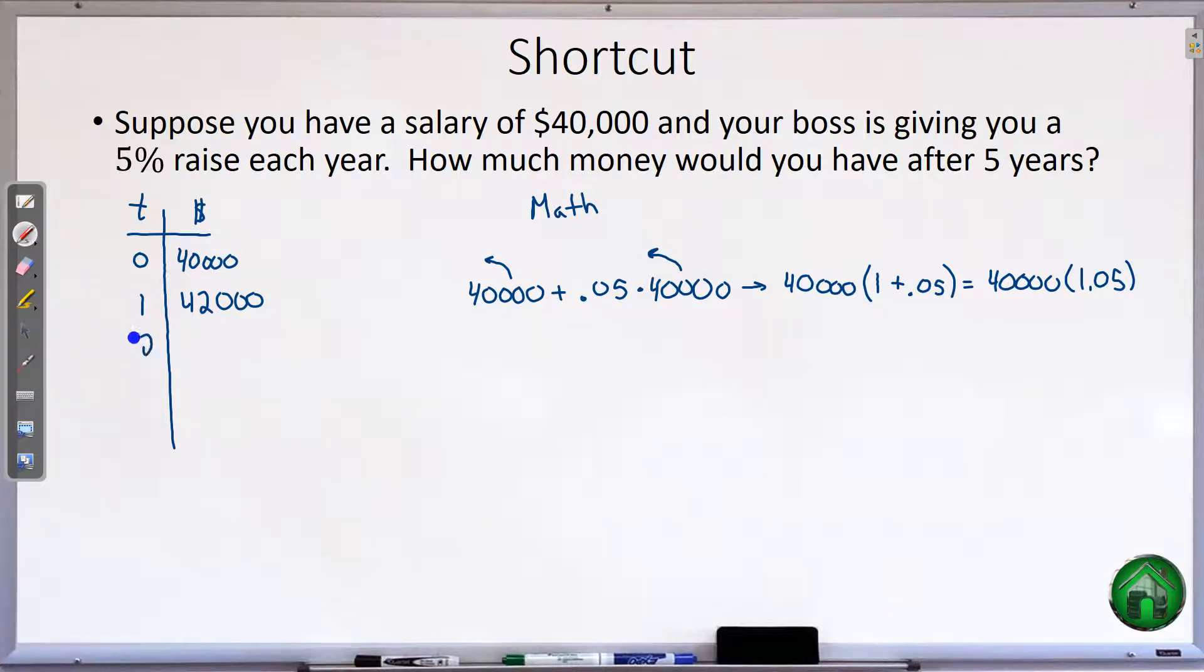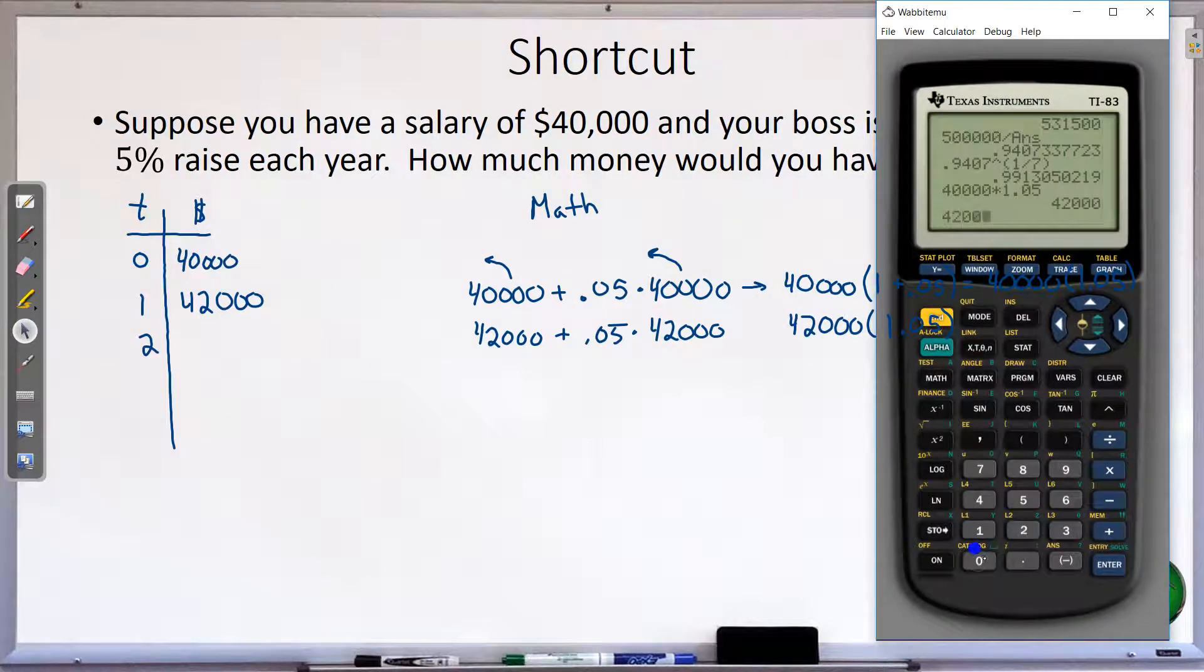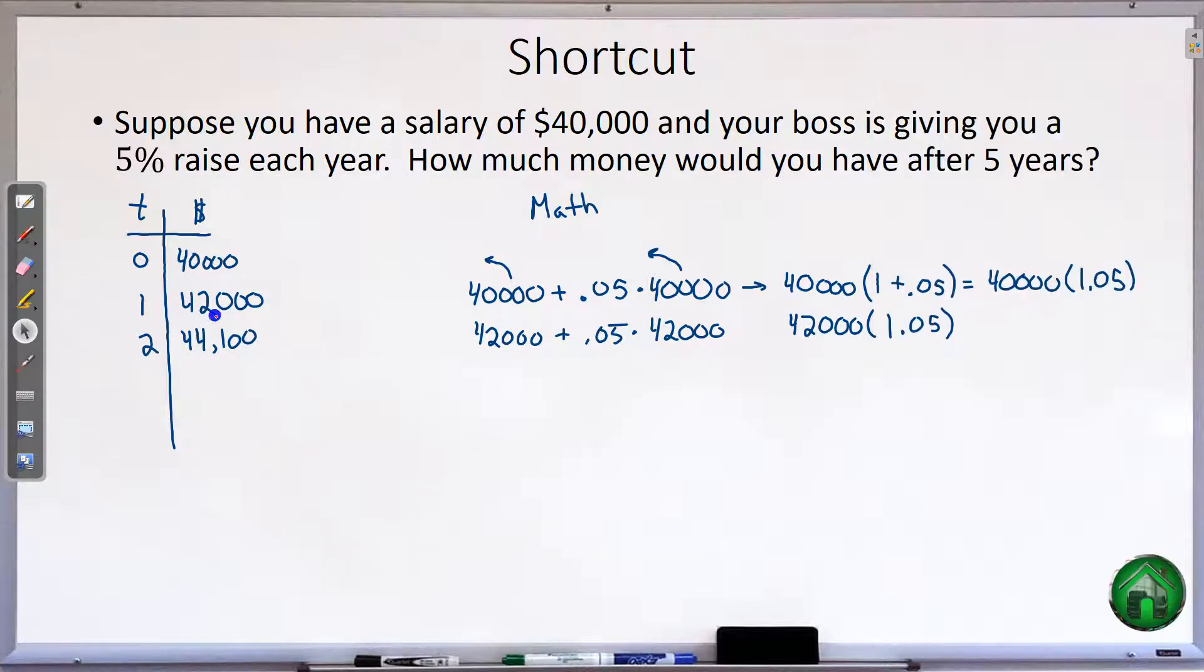And so we're going to do that one more time so you can kind of see how that works. So now for our second year, we did $42,000 plus .05 times $42,000. And so now you can see that they both have a $42,000 in common. So I would pull out, factor out that $42,000. You'd be left over with a 1 plus the .05, so that's 1.05. And now that's all we have to do. $42,000 times 1.05 gives us $44,100.